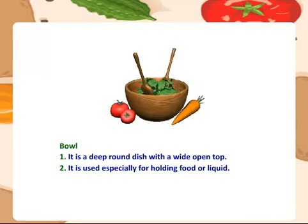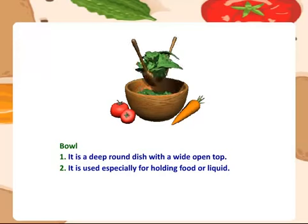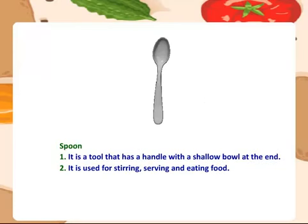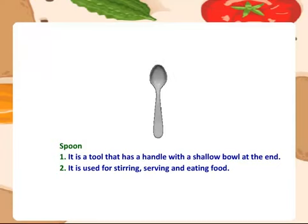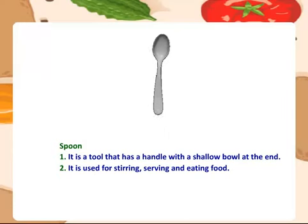Bowl — it is a deep round dish with a wide open top. It is used specially for holding food or liquid. Spoon — it is a tool that has a handle with a shallow bowl at the end. It is used for stirring, serving and eating food.